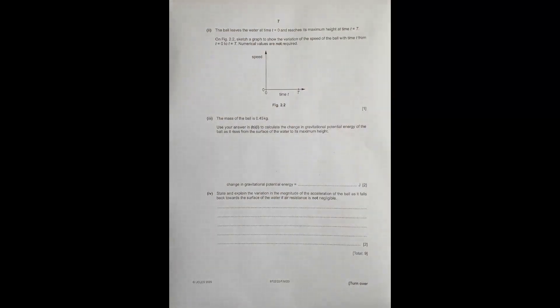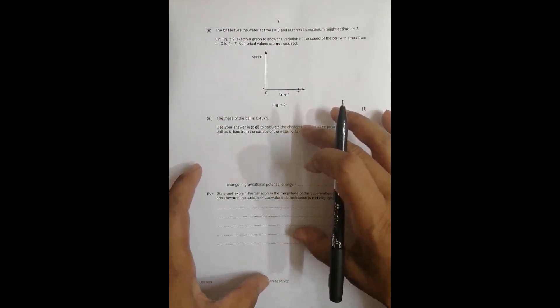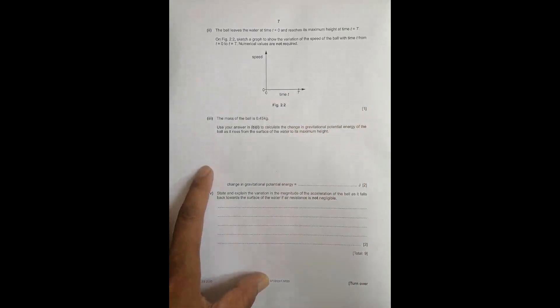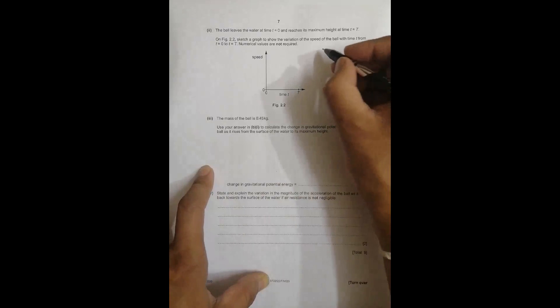Part two: the ball leaves the water at time t equals 0 and reaches its maximum height at time capital T. On figure 2.2, sketch a graph to show the variation of speed with time from t equals 0 to t equals T. Values are not required.